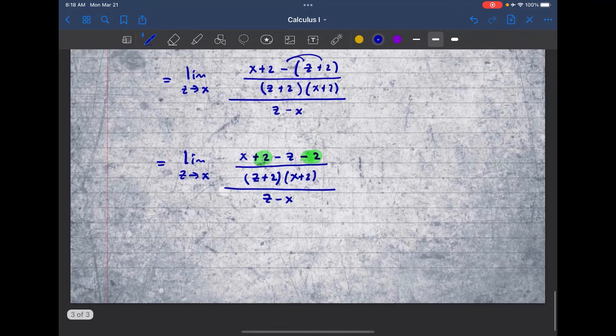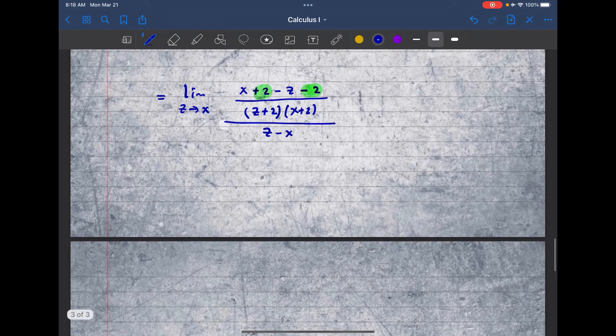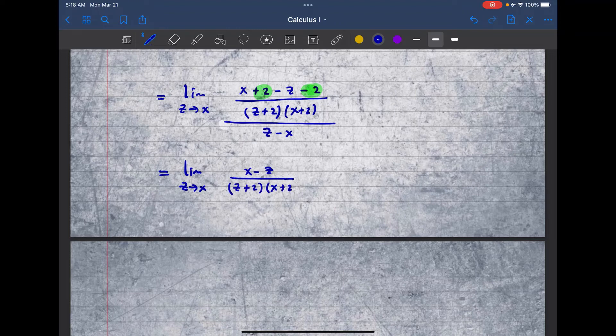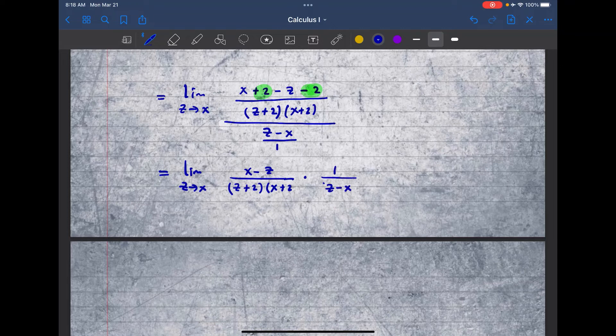And that leaves me with the following. We have the limit as z approaches x of x minus z all over z plus 2, x plus 2 all over z minus x. Now here I'm going to use this fact that I can write it as over 1 and then multiply by its reciprocal. So it's 1 over z minus x like that.